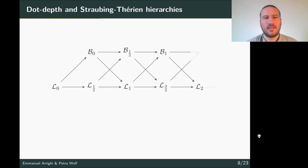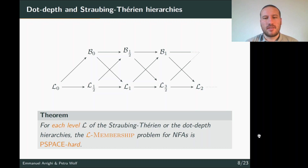In this work we are interested in the intersection emptiness problem for languages belonging to specific levels of each hierarchy. Checking whether a given automaton's language belongs to the right level is not part of the problem, and the reason is that we show checking whether an NFA belongs to some level of the Straubing-Thérien or dot-depth hierarchy is at least PSPACE-hard.